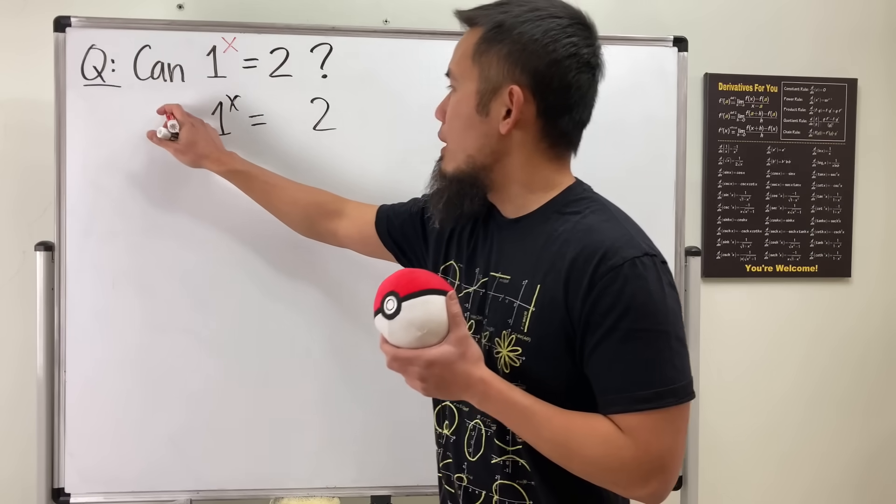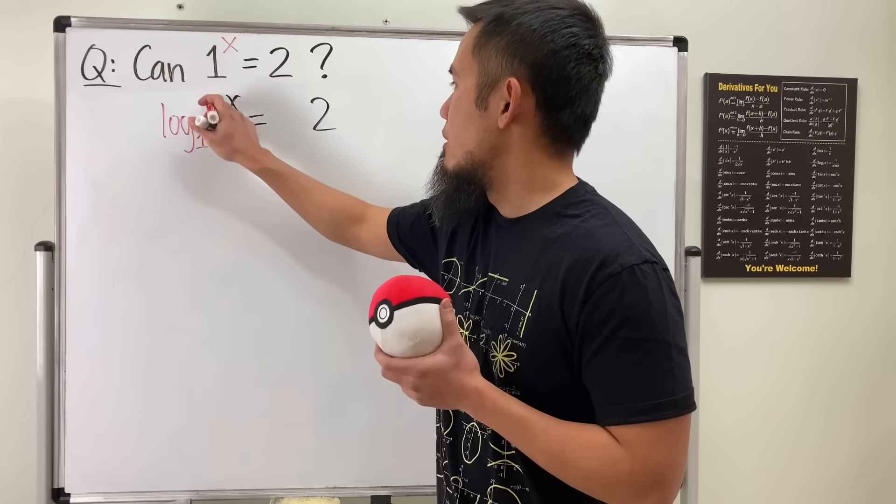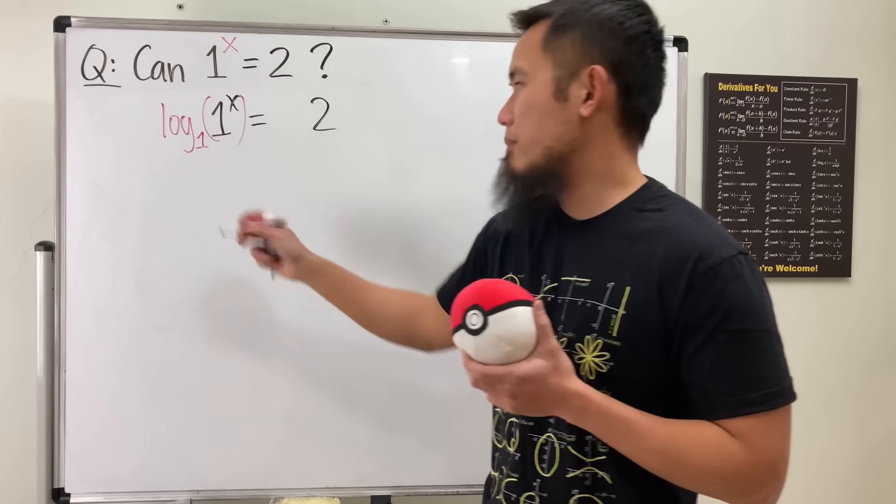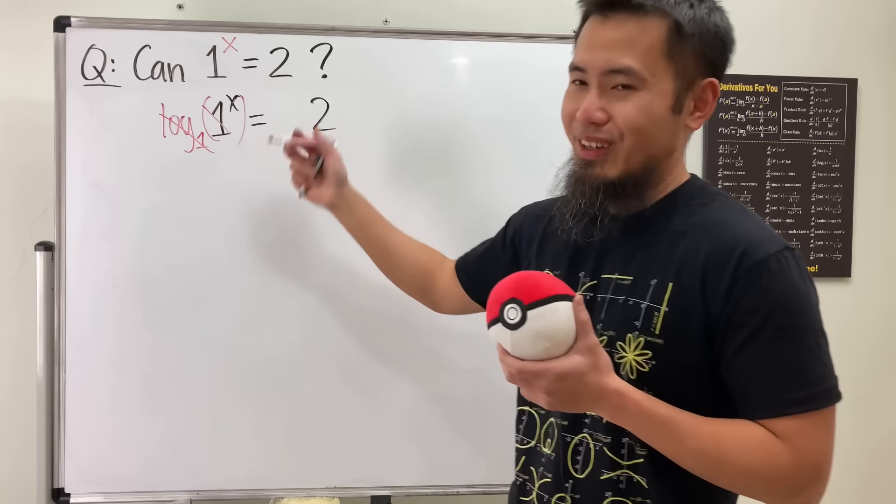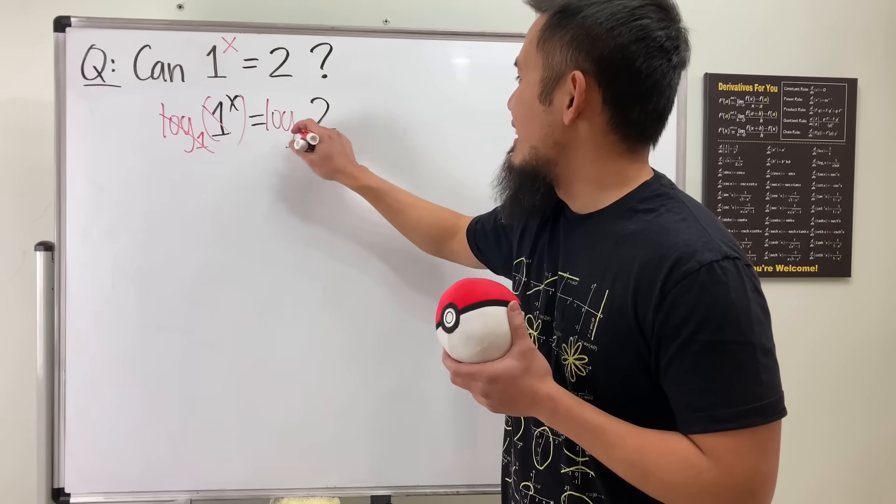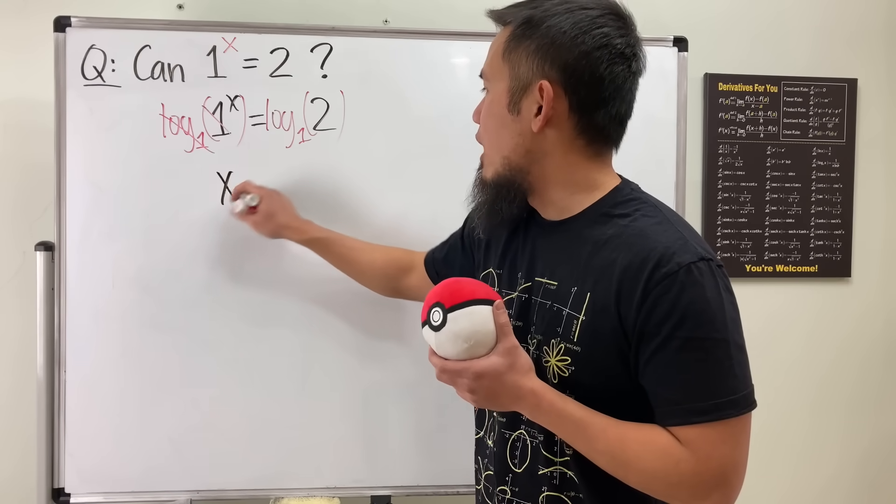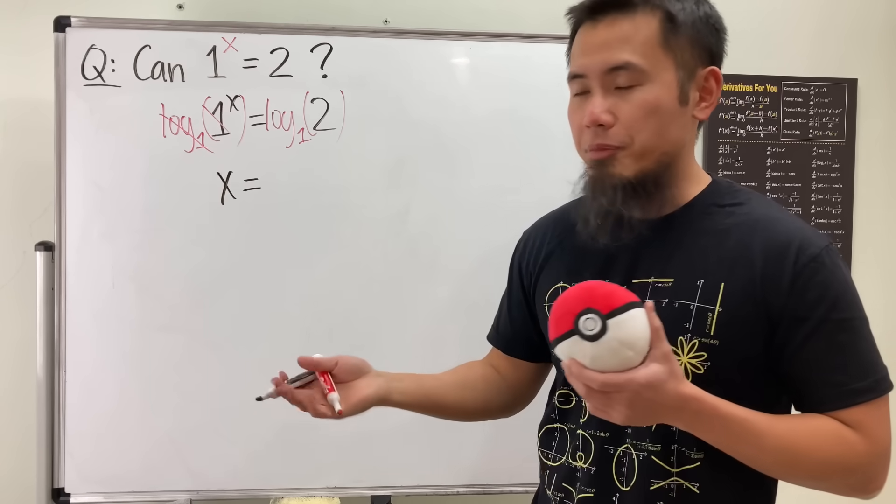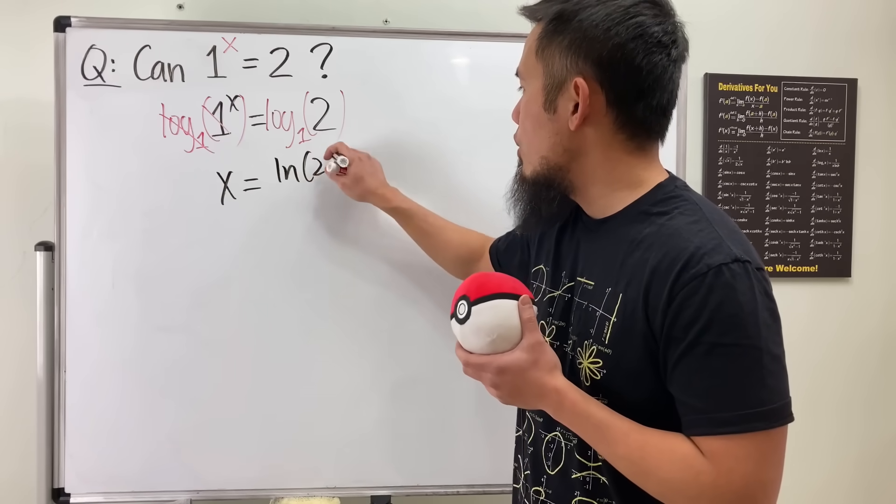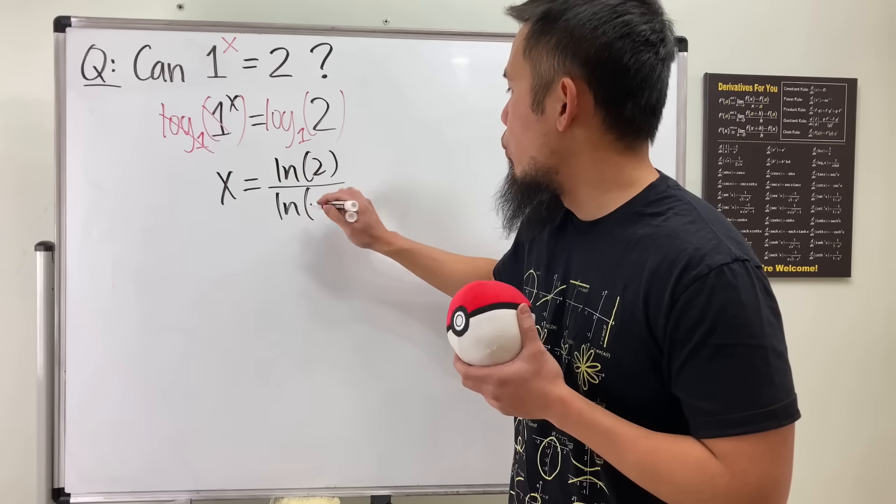So I would like to take logarithm, and the logarithm that I'm going to use is log base 1. It's the best one that we can use right here because they cancel out. All right. Anyway though, the left-hand side, we will just get x by itself. And then on the right-hand side, I will use a change of base formula, which will be ln 2 over ln 1.